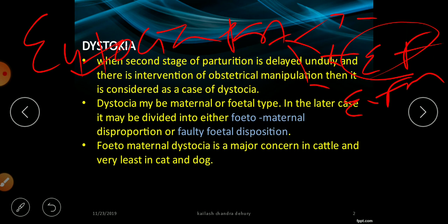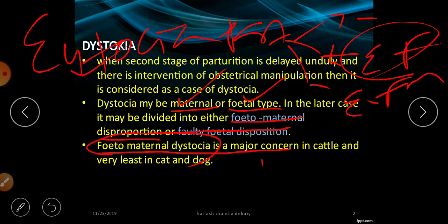Dystocia may be of maternal or fetal type. Maternal type involves causes related to the dam, and fetal type involves factors related to the fetus. In fetal type, cases may be divided into fetomaternal disproportion — where there is variation in fetal size versus maternal pelvic size — or faulty fetal disposition. Fetomaternal dystocia is a major concern in cattle and very least in cat and dog.